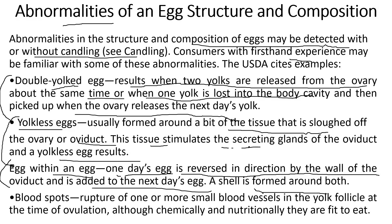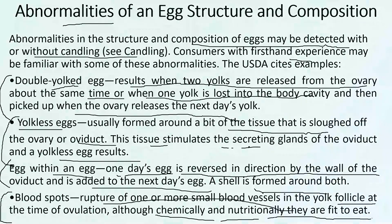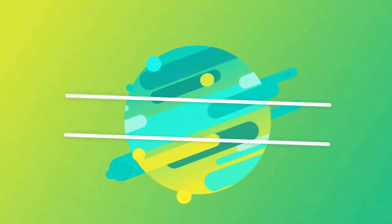Finally, blood spots result from the rupture of one or more small blood vessels in the yolk follicle at the time of ovulation. Although they may appear undesirable, eggs with blood spots are chemically and nutritionally fit to eat. That concludes the egg segment — if you liked the video, please press the like button, share it with your friends, and stay tuned for more videos coming soon.